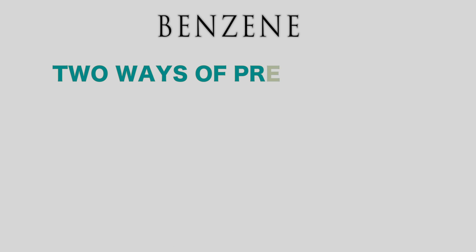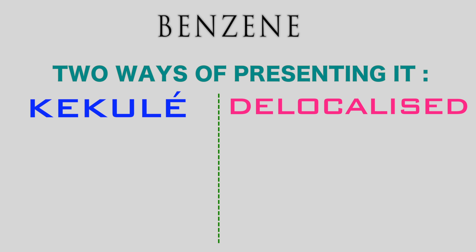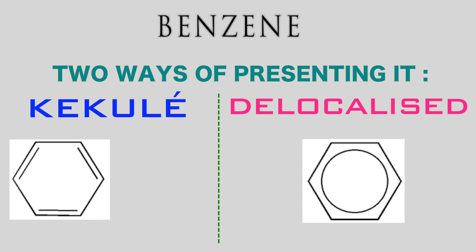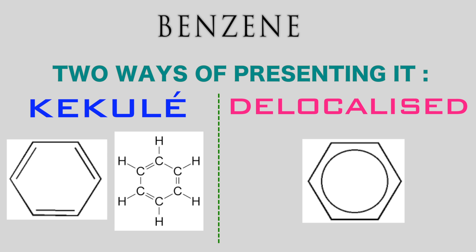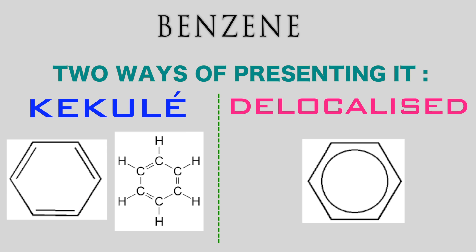There are two ways of presenting benzene: the Kekulé model and the delocalized model. The Kekulé model was proposed in 1865 and was said to be made of a ring of six carbon atoms with alternating single and double bonds between them, as shown in the picture, with each carbon atom bonded to one hydrogen atom. Unfortunately, the Kekulé model is incorrect — there are three main reasons why.